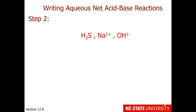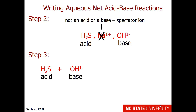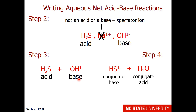Step 2: decide which is our acid and which is our base. Sodium ion is a spectator — you won't find it on the acid-base table. H₂S is our acid and hydroxide is our base. Step 3: write down our acid and our base, then come up with our conjugates. We deprotonate H₂S to give us the conjugate base HS⁻, and we protonate hydroxide to give us H₂O as the conjugate acid.